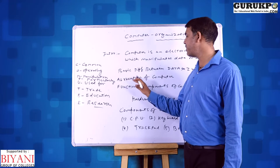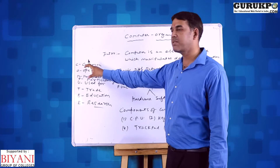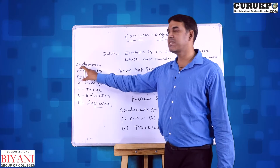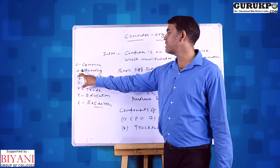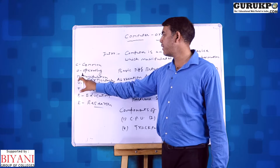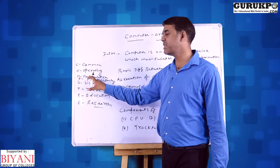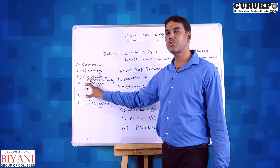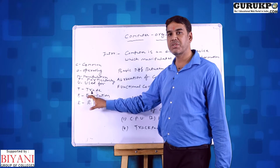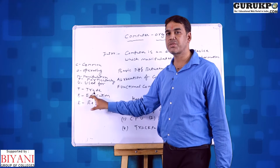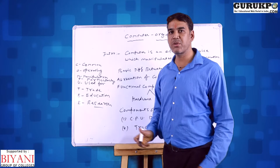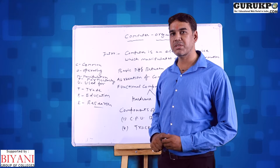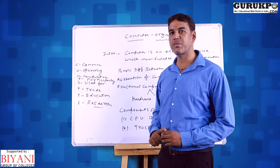We also discussed the abbreviation of computer. What is the full form of computer? C is representing Common, O is representing Operating, M is representing Manipulations — which is particularly used for trade, education and research. So computers are basically used for trade, education and research — these are the main areas of the computer.